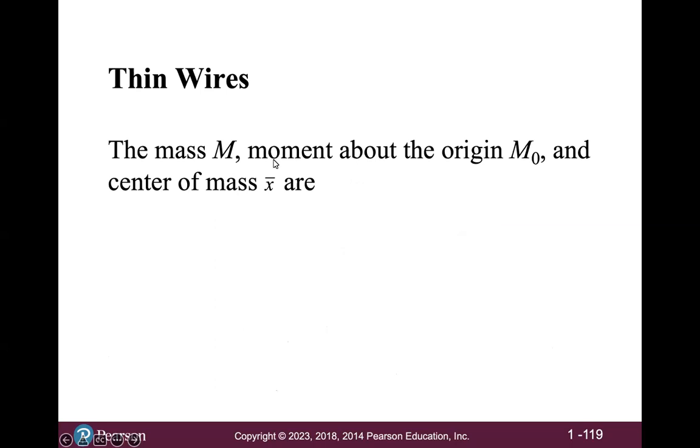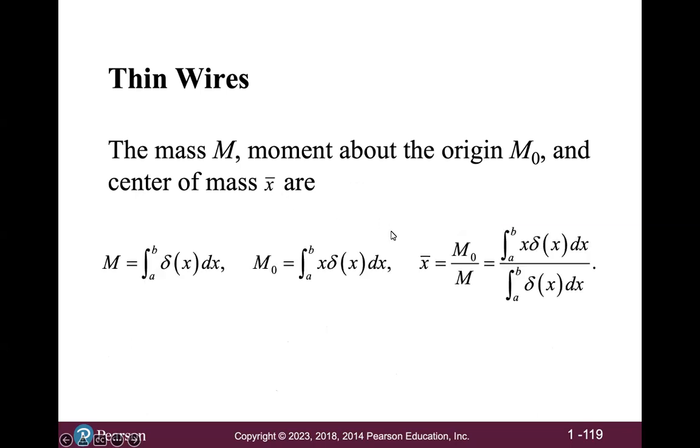The mass m, the moment about the origin m sub 0, and the center of mass x bar are given by these integrals. m is the integral from a to b of delta x with respect to x. m sub 0, the moment about the origin, is the integral from a to b of x times delta x with respect to x. And finally, x bar, the center of mass, is the quotient of those two quantities, the moment divided by the mass.